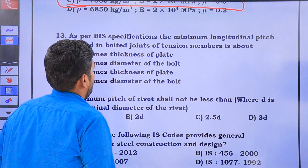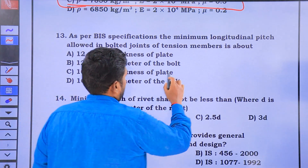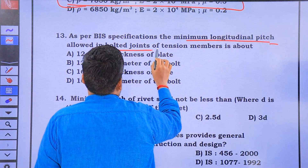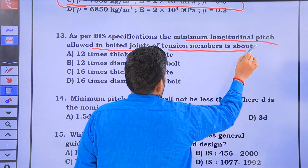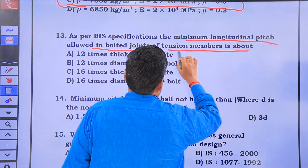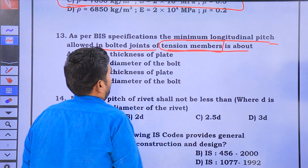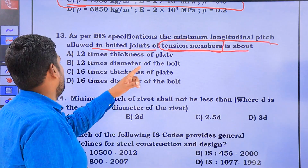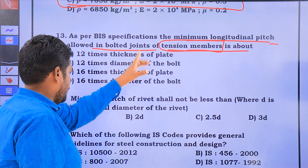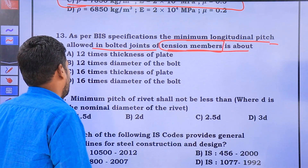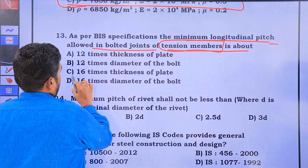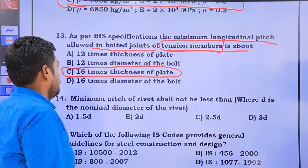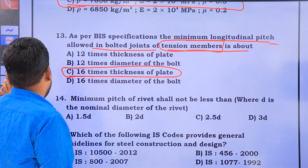As per the IS classification, the minimum longitudinal pitch allowed in a bolted joint for a tension member is 16 times the thickness of the plate. That is the main point.